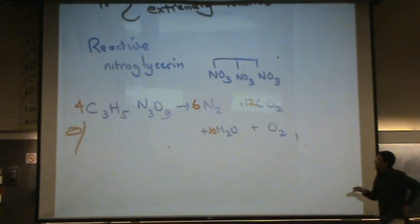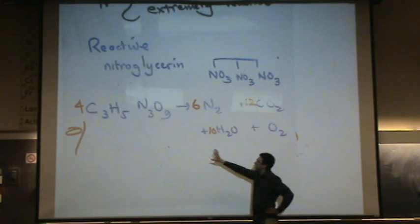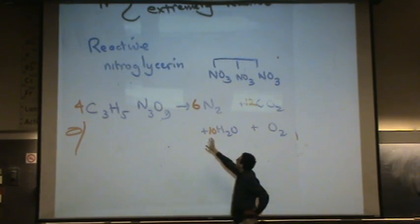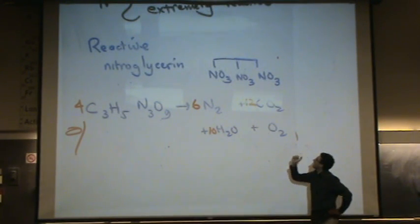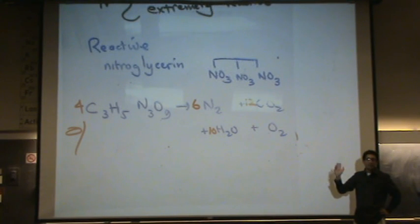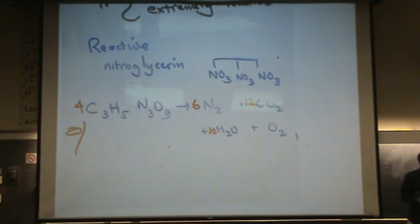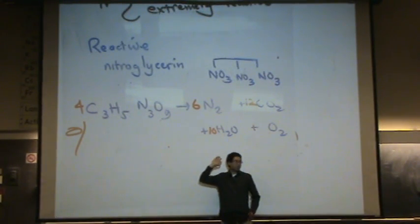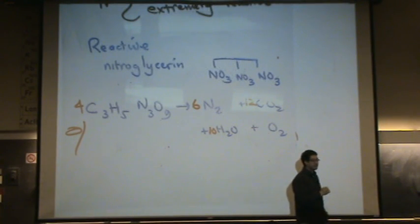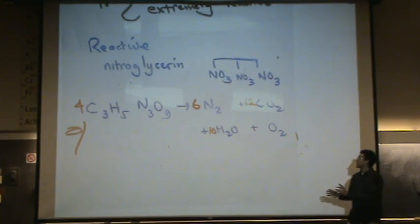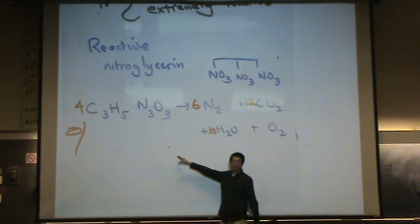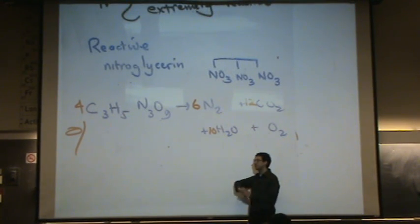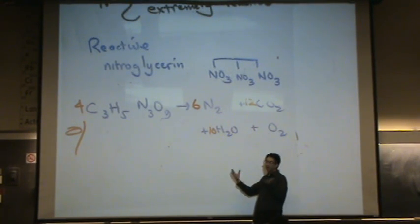Now, the interesting thing about this, you've got nitroglycerin in the reactants. In the products, you've got N2, CO2, H2O, and O2, all of which are extremely stable. This is common with all bombs or explosives, where the products are always very stable. And so, the energy difference between extremely reactive and extremely stable is so big, that's where the energy comes from.